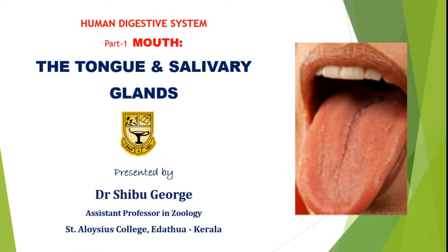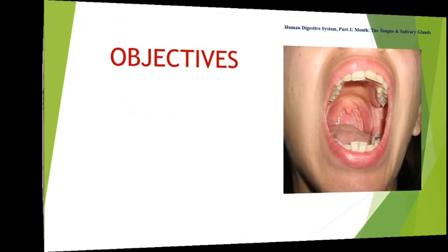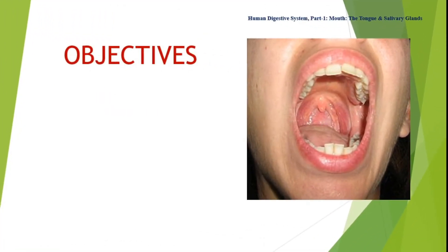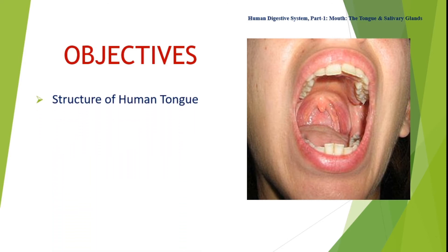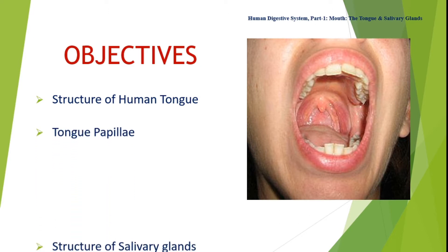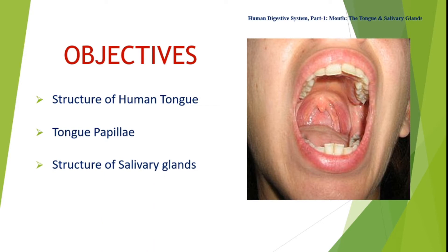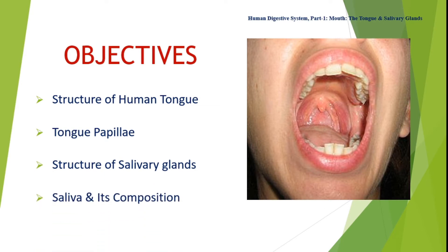Dear students, welcome to the online class on human digestive system, part one: the mouth, the tongue, and salivary glands. In this video we learn about the structure of the human tongue, tongue papillae, structure of salivary glands, saliva and its composition.